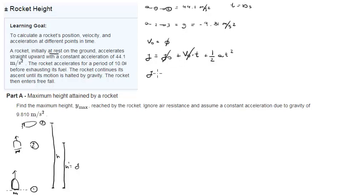So, we get y equals ½at², which means y equals ½ times 44.1 times 10 squared, which equals 2,205 meters.